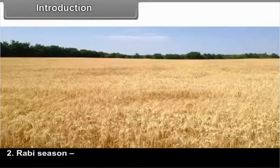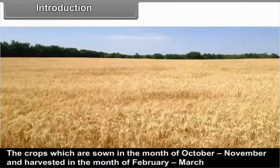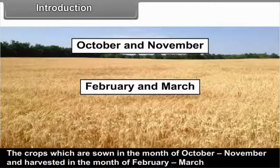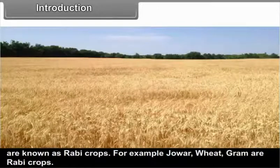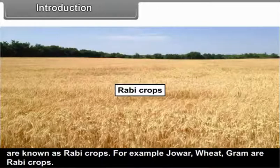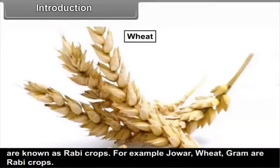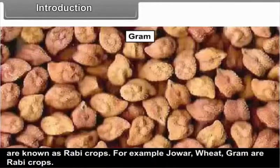Second, the Rabi season: crops which are sown in October or November and harvested in February or March are known as Rabi crops. For example, Jowar, Wheat, and Gram are Rabi crops.